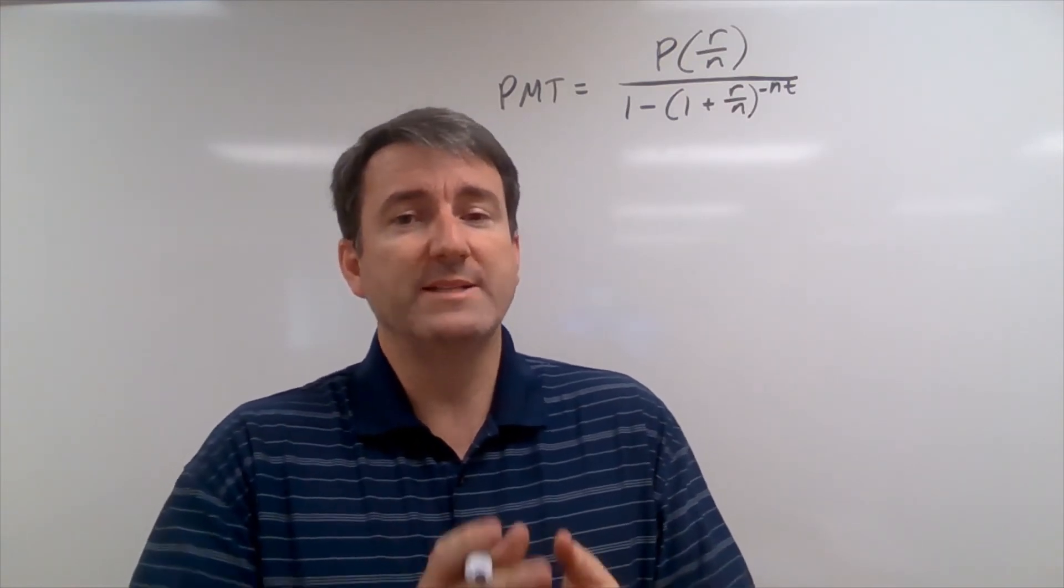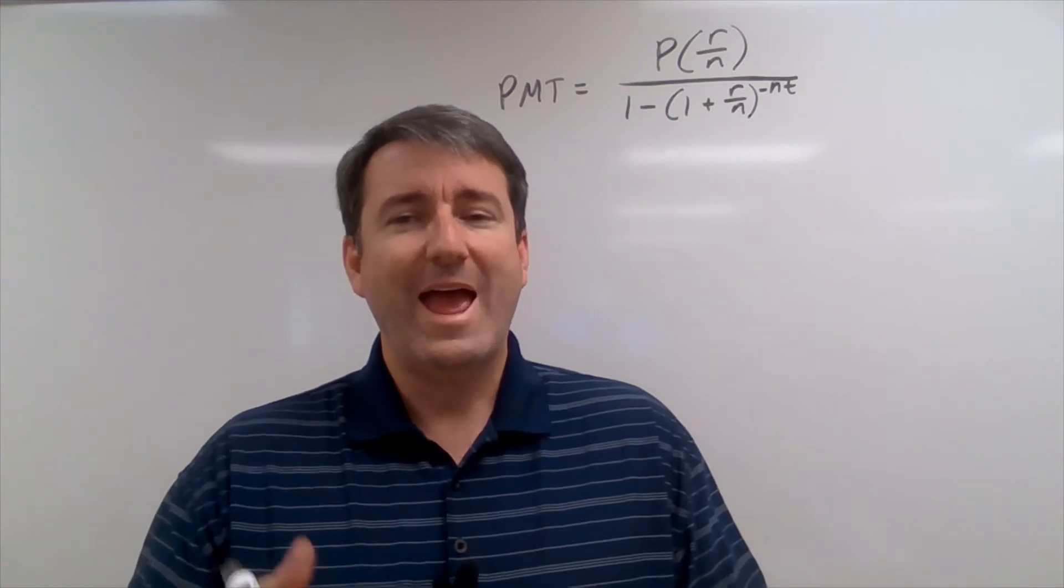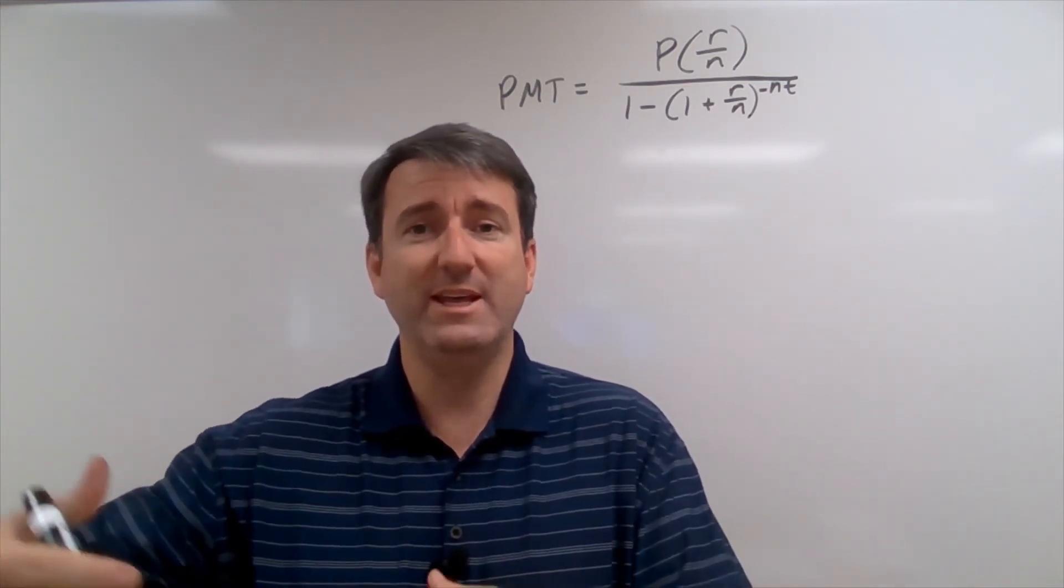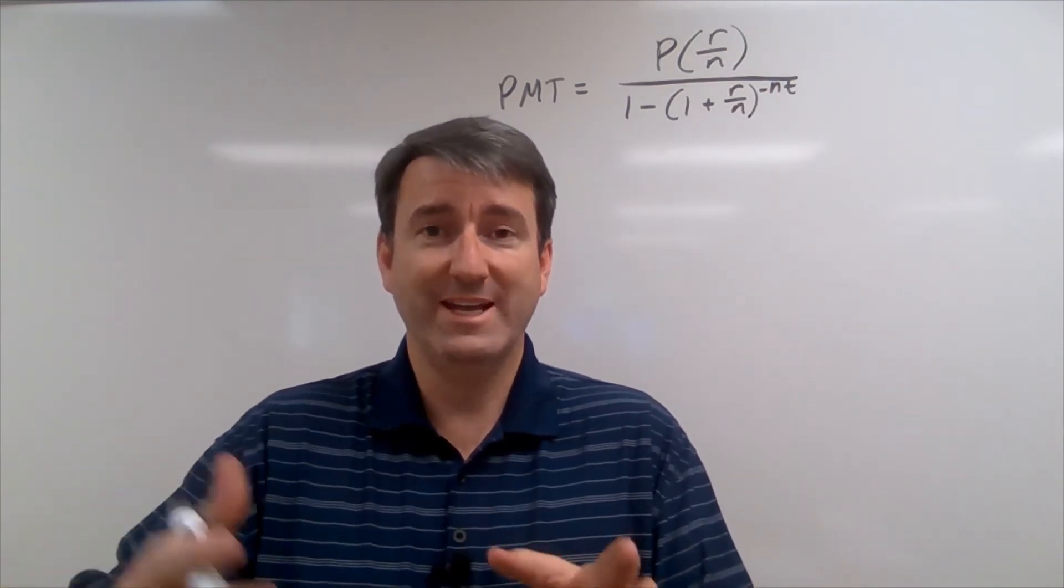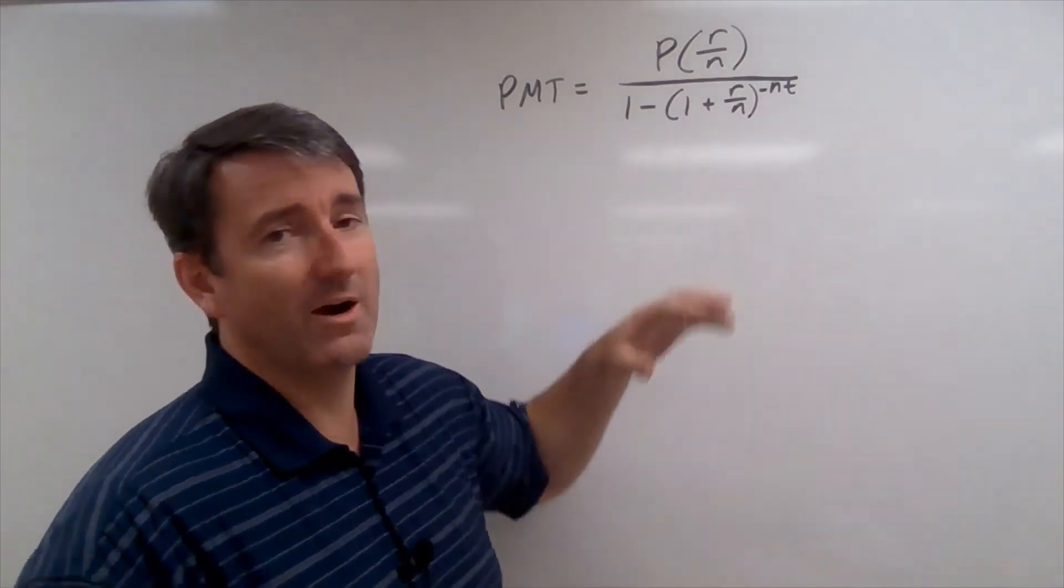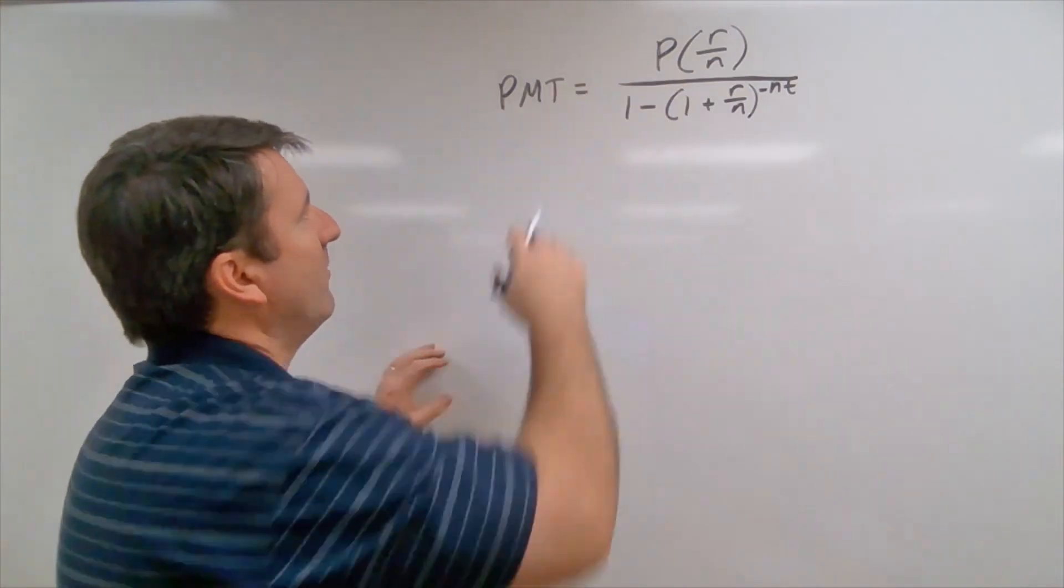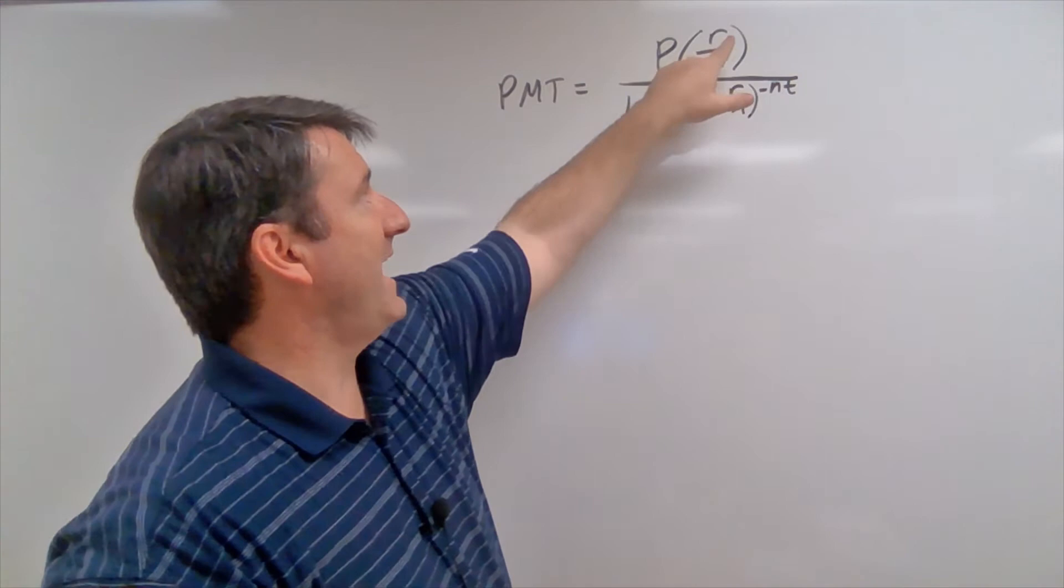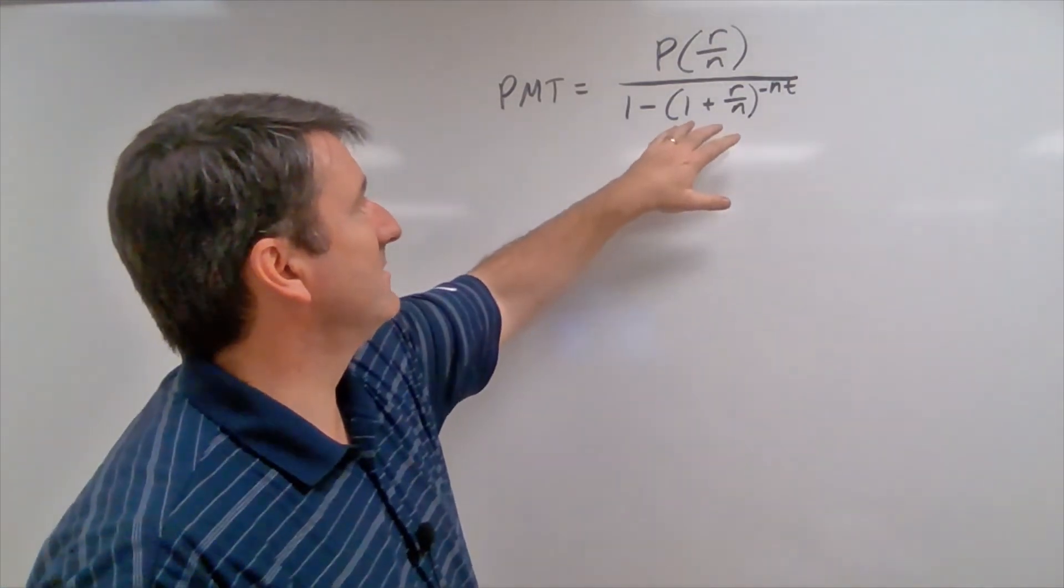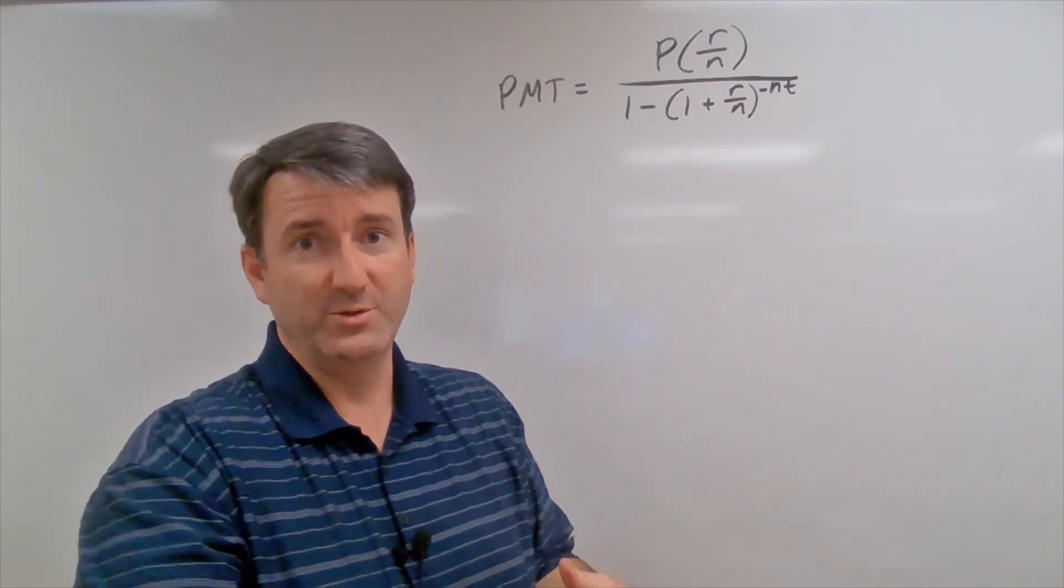Our second example says, suppose you have a balance of $12,500 on your credit card, which has an APR of 19%. If you make no additional charges on the card, how much will you have to pay monthly in order to pay off the balance in two years? So what we've done here is, since we're not making any additional charges on the card, and we're trying to pay this off in equal monthly payments over a certain period of time, we've turned this into an installment loan. And we can use our installment loan formula to figure out how much this monthly payment is going to have to be.